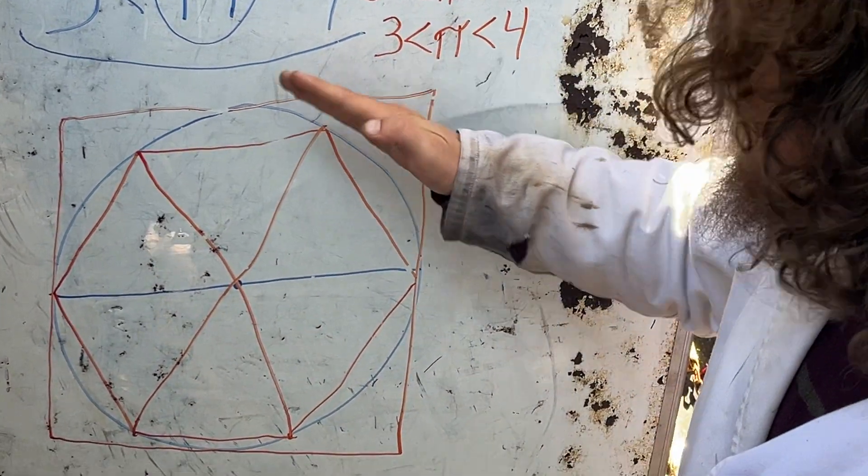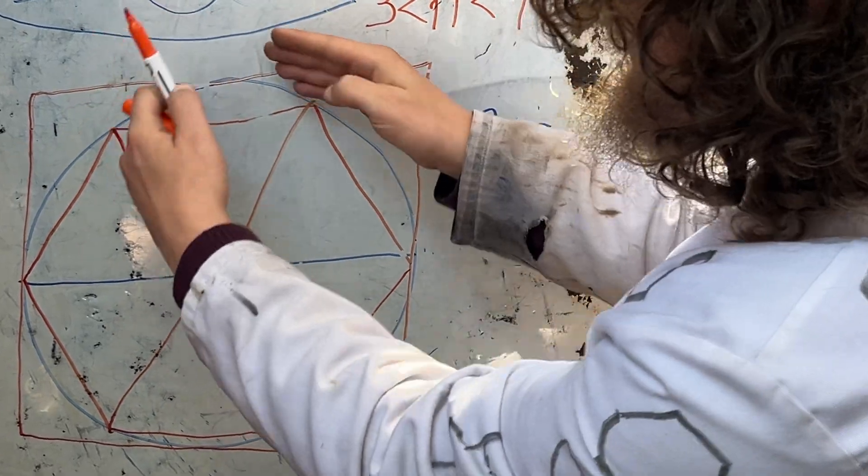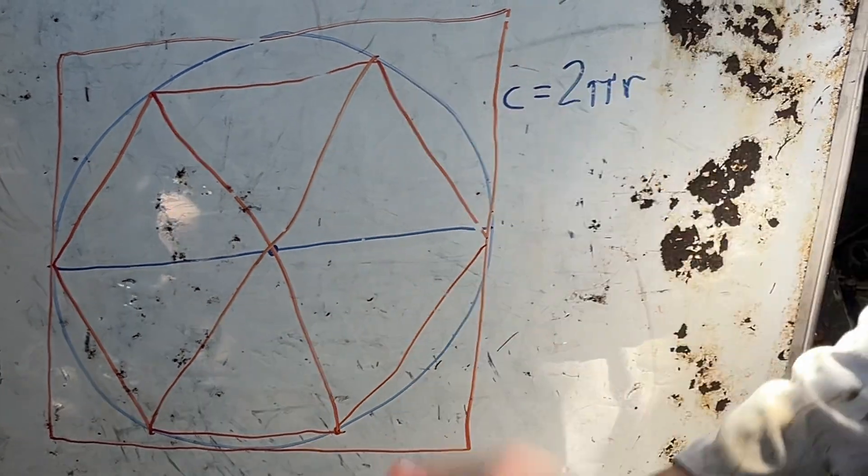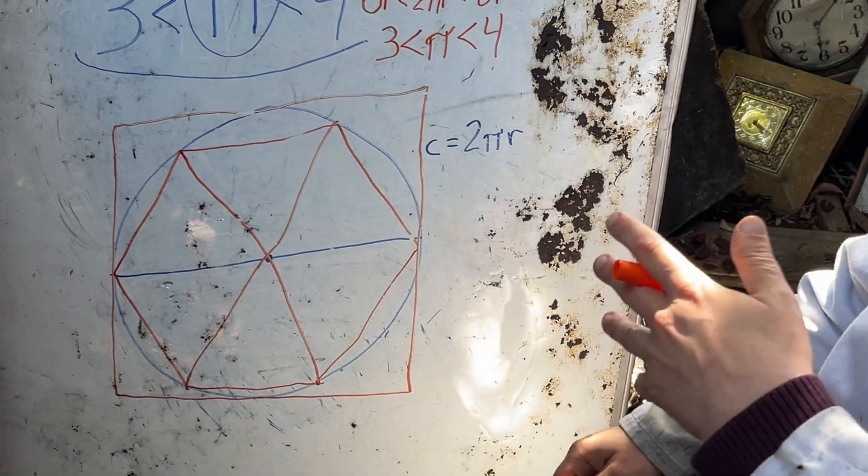And polygons on the outside with more and more sides would also crunch down to being closer and closer to an upper bound that pi couldn't be larger than.